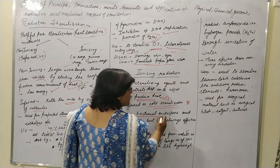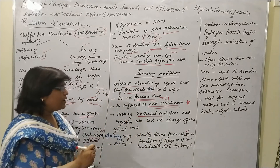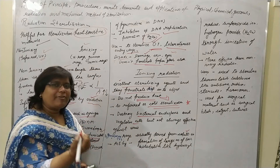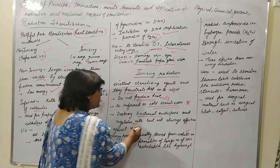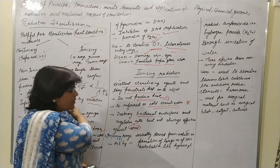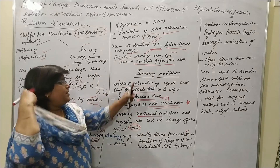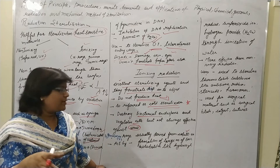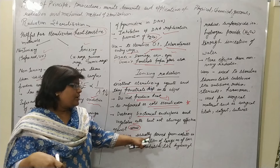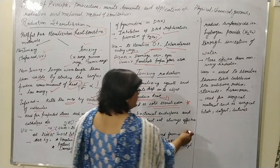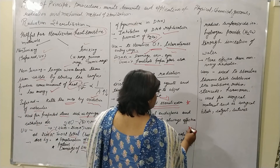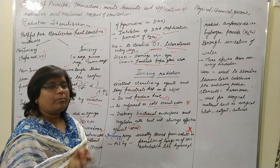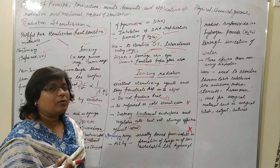Ionizing radiation destroys bacterial endospores and vegetative cells, but sometimes it is not as effective against viruses. In ionizing radiation, gamma rays, cosmic rays, and X-rays are used. Gamma rays are generally derived from cobalt-60.